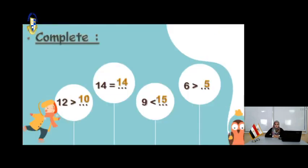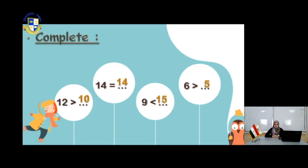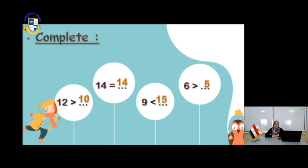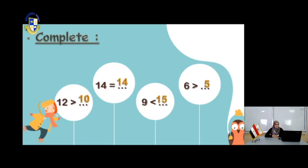Let's complete together. You have 12 is greater than — think of any numbers in your mind that 12 can be greater than. You have 10, 9, 8. But you cannot write 13 or 15. 12 is greater than any number that has to be smaller than 12. For 14 equals what — equal means the same number, so 14 is equal to 14. It cannot be 15, 0, or 10.